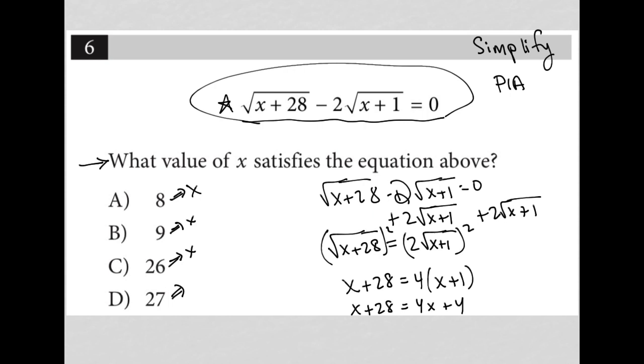And I'm going to combine my like terms on the left with the x. So subtract 4x. Combine my numbers on the right. So minus 28 and minus 28. So x minus 4x is negative 3x. And 4 minus 28 is negative 24.